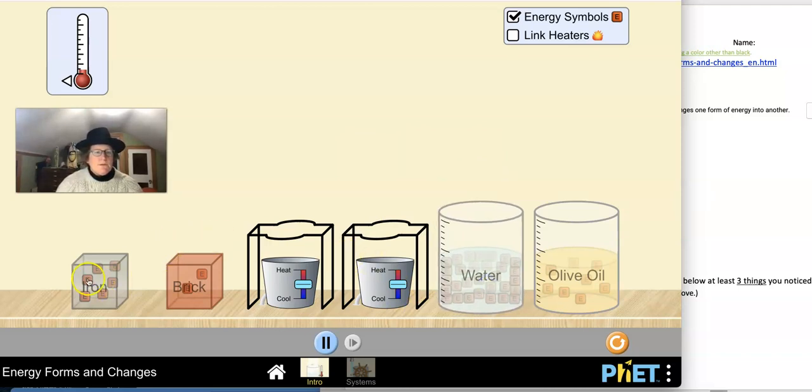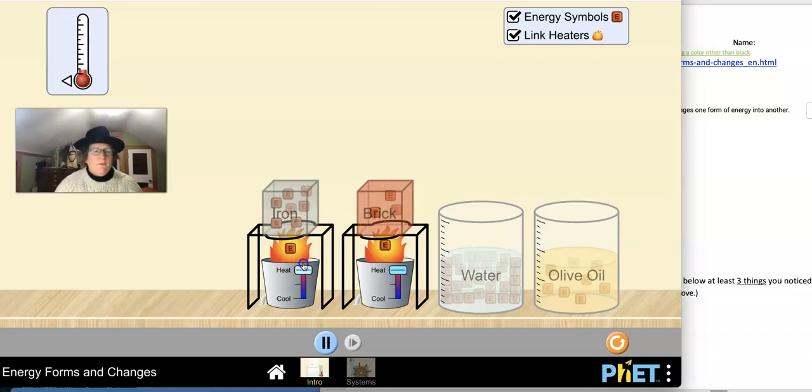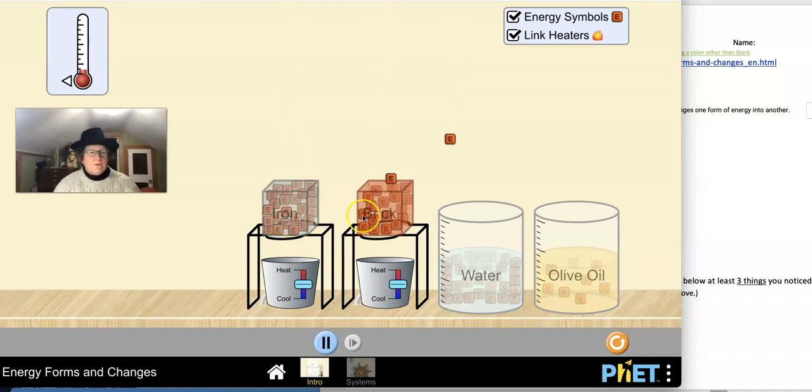Another thing you can do in the simulation is you can put the iron and the brick on the heat at the same time. We'll need to link heaters for this. And you can see the energy symbols in the iron. You can count them, and you can count them in the brick here. They're a little bit different. And if we heat them, they behave a little bit differently. Watch what happens. Watch when they start to give off heat. When heat starts to travel into the atmosphere in each of them. And look at how many energy symbols are being held by the iron versus the brick.